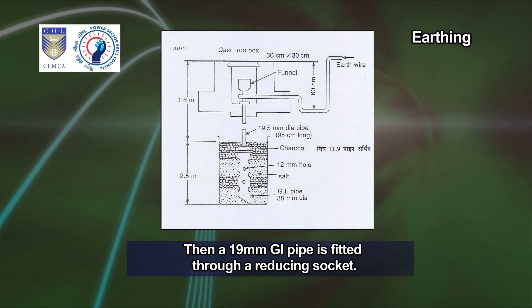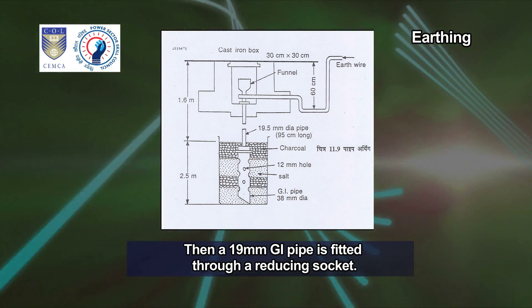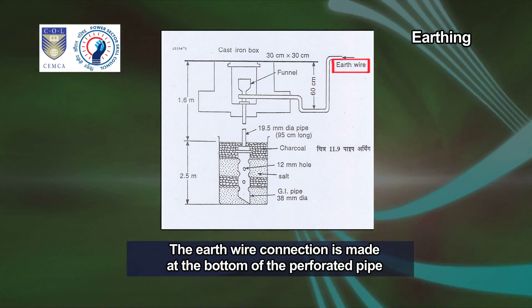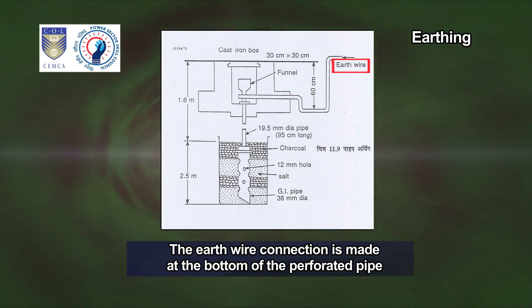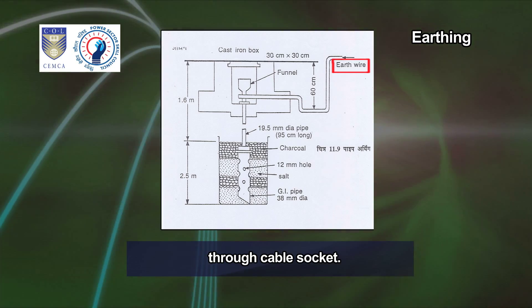A 19 mm GI pipe is fitted through a reducing socket. The earth wire connection is made at the bottom of the perforated pipe through a cable socket.